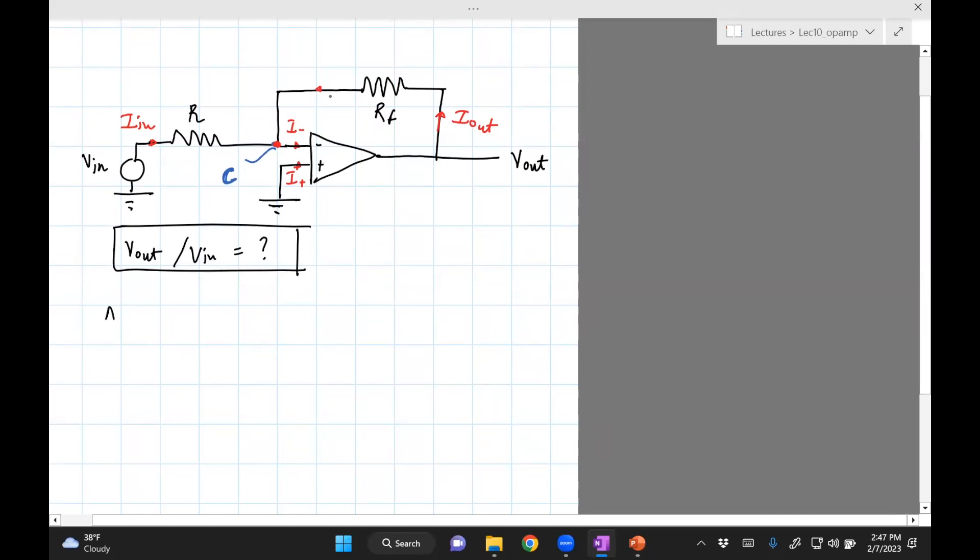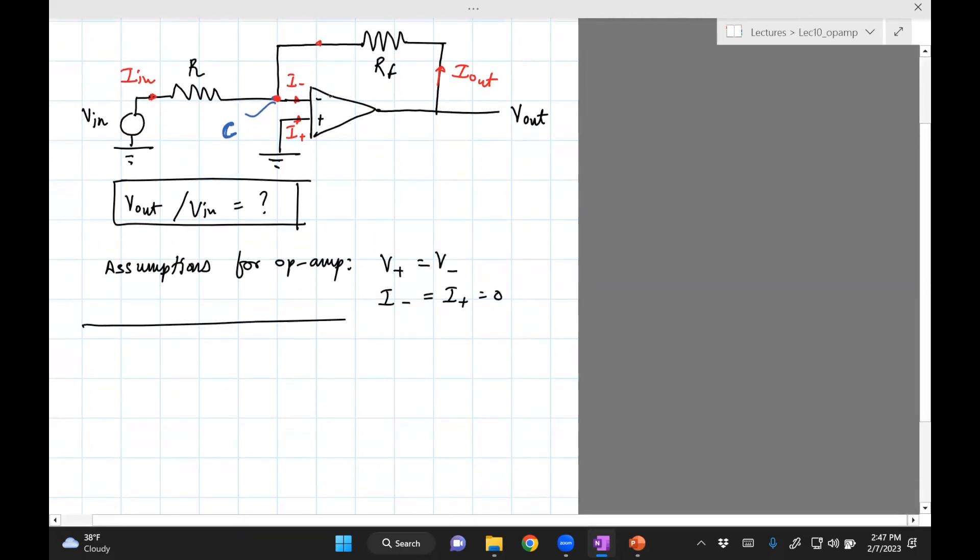So the op-amp assumptions for op-amp, just two of them. One is V_positive equals V_negative, and I_negative equals I_positive equals zero. So these other things now we can use.